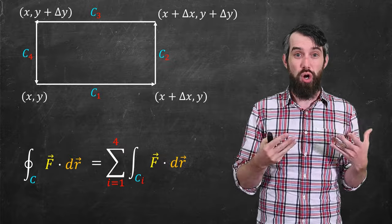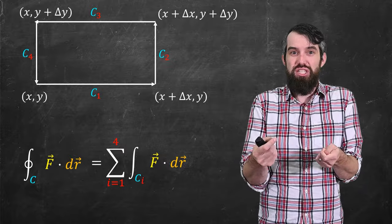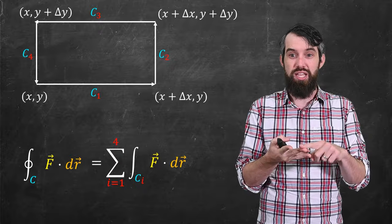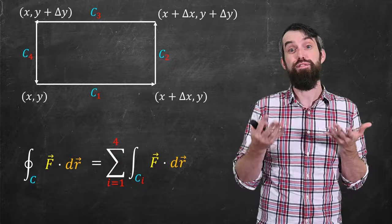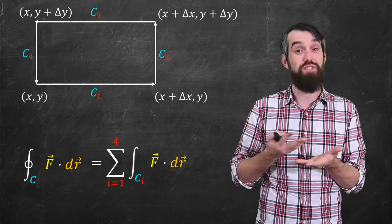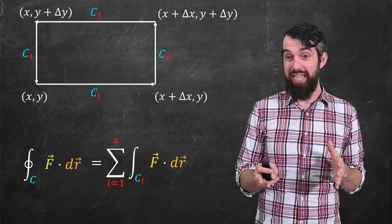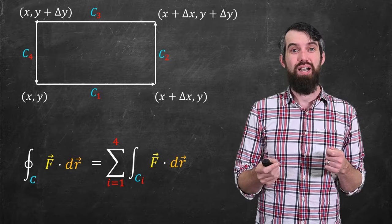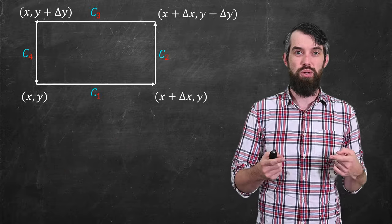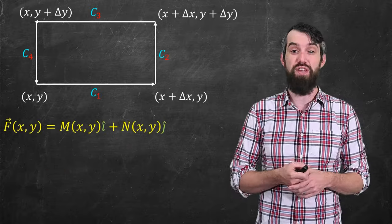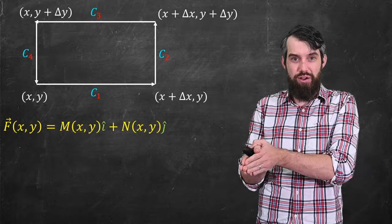The circulation around this tiny rectangle is my stand-in for the tendency to rotate at a particular point. Since the curve has four components c1, c2, c3, c4, the total circulation is just the sum of those four line integrals. To compute it out in the infinitesimal case, I'll write the field f as M in the i-hat direction and N in the j-hat direction.